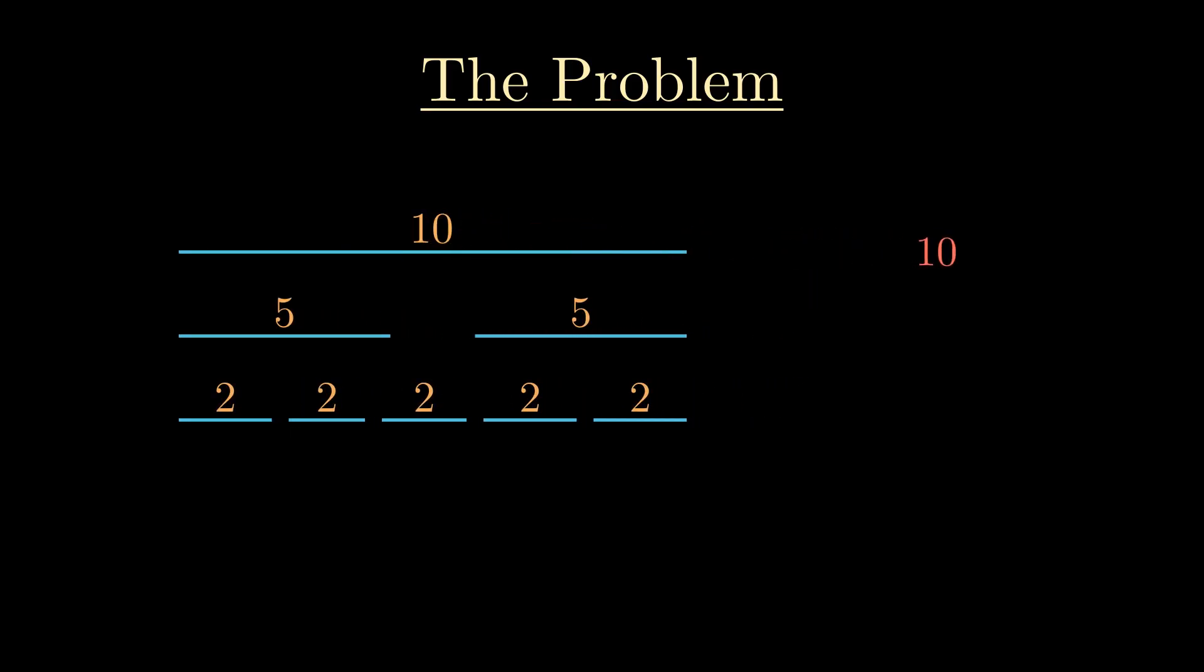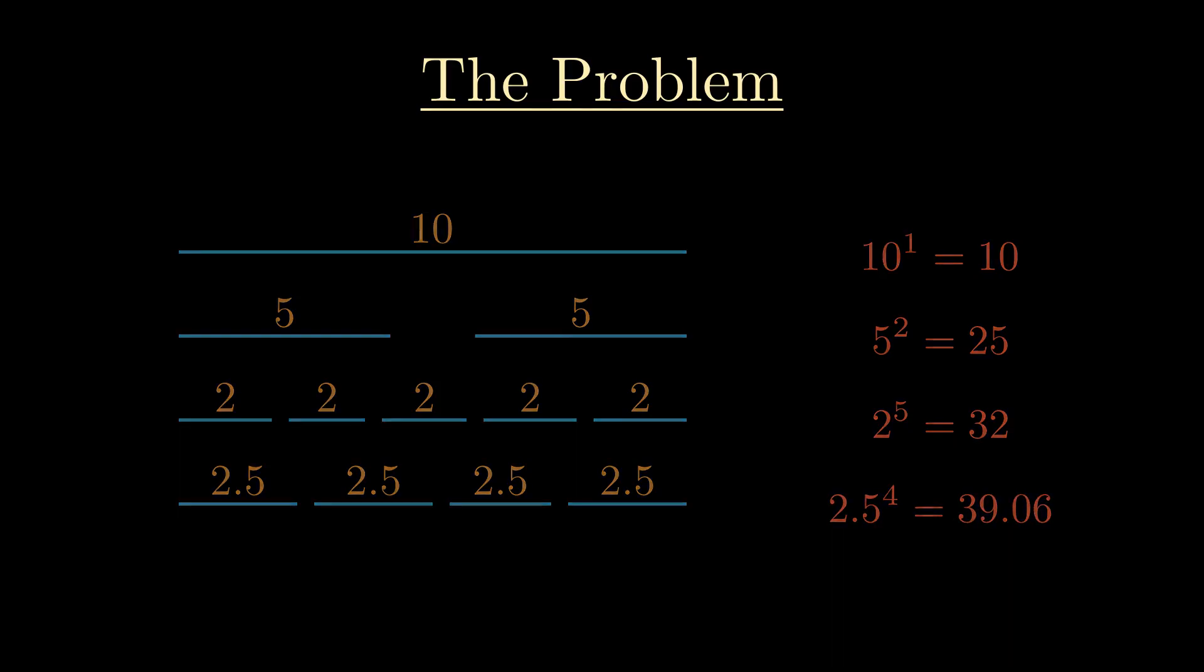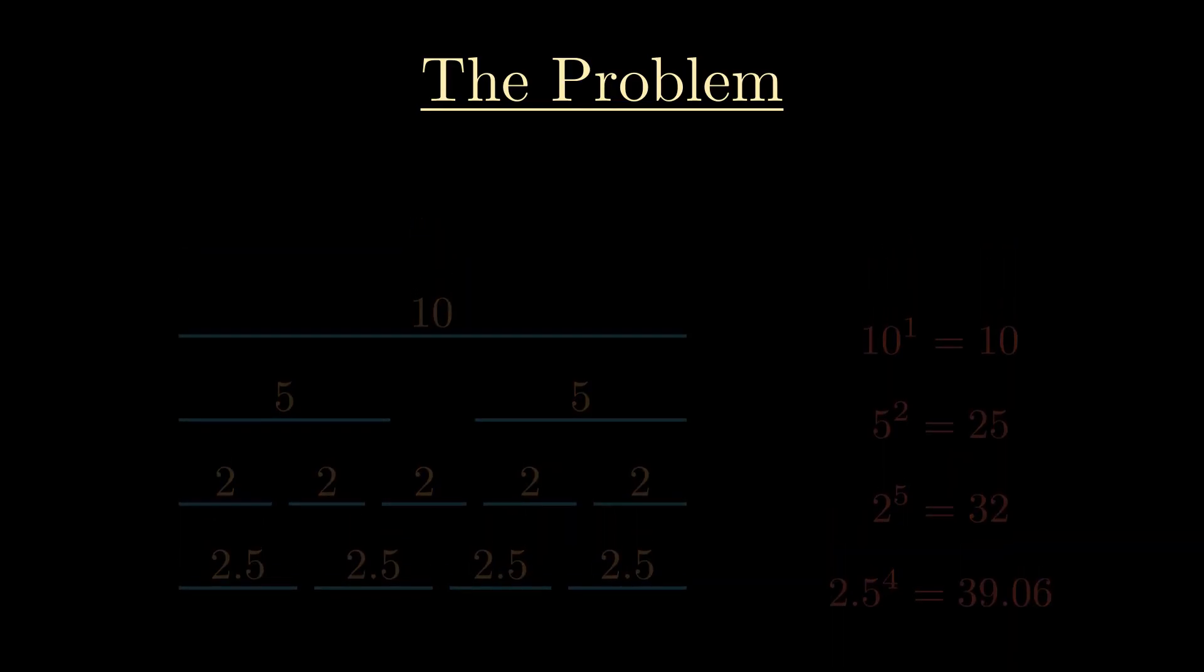And what we're gonna do is we're gonna multiply all of the numbers in that given row together. So for example, 10 times 1 or 5 times 5 or 2 times 2 times 2 times 2 times 2, which is just 2 to the 5, and we'll get a value. And we can do this for any length we want given that it's the same length and it equals 10 when we add them all together.